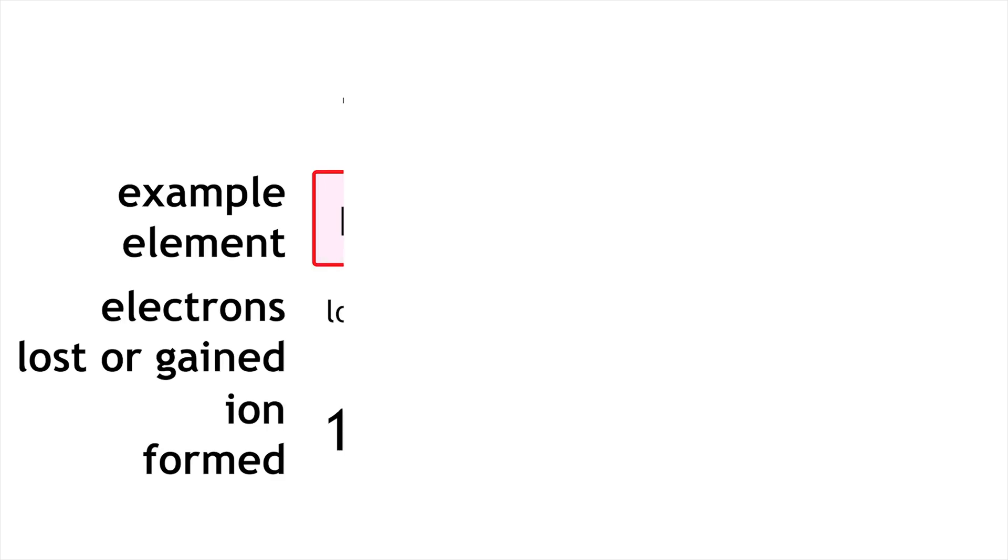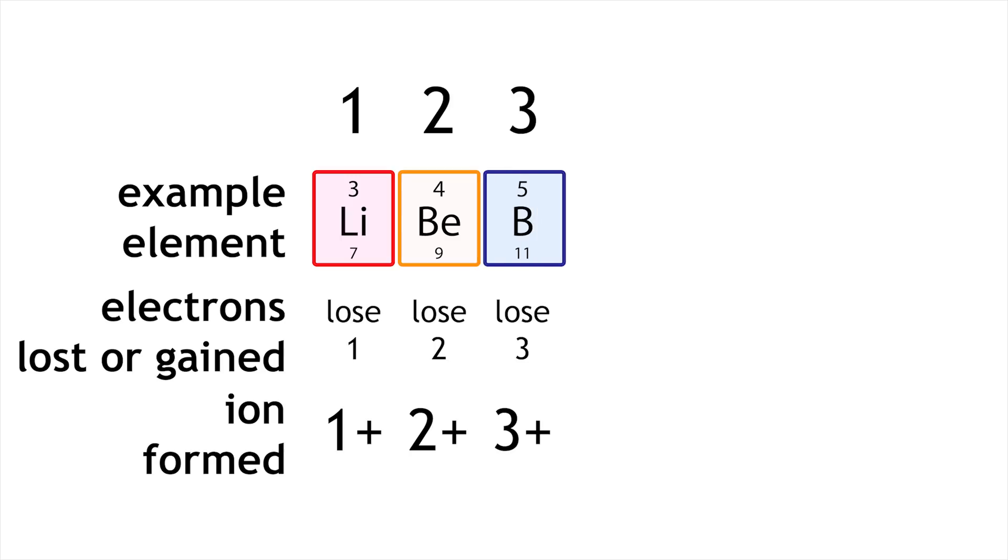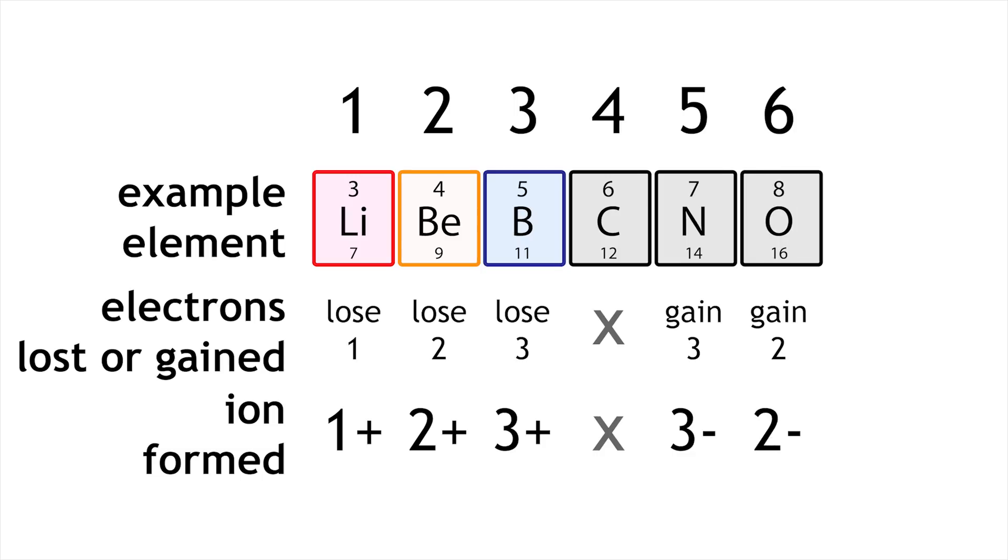Group 1 metals will always form a 1 plus ion. Group 2 metals will always form a 2 plus ion. Group 3 metals will always form a 3 plus ion. Group 5 non-metals will always form a 3 minus ion. Group 6 non-metals will always form a 2 minus ion. And group 7 non-metals will always form a 1 minus ion.